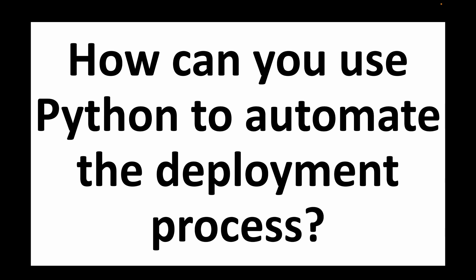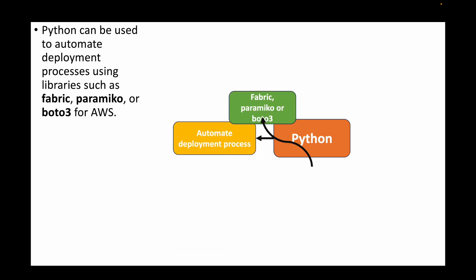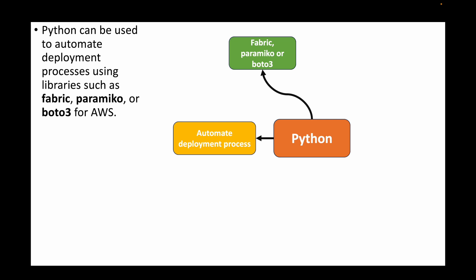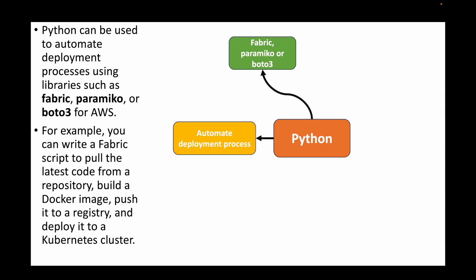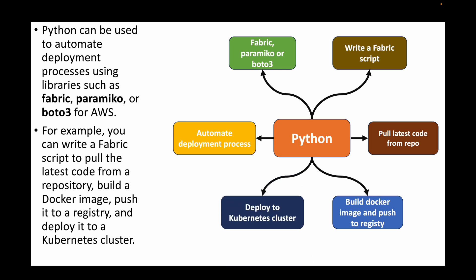The next question is: how can you use Python to automate the deployment process? We can use Python to automate your deployment process using libraries like Fabric, Paramiko, or boto3 for the AWS platform. For example, we can write a Fabric script that will pull the latest code from your central repository, build a Docker image from that code, push that image to your central registry, and then deploy it to your Kubernetes cluster.